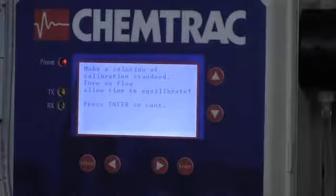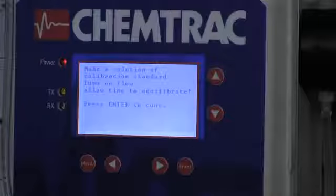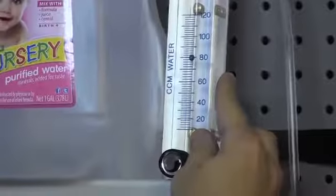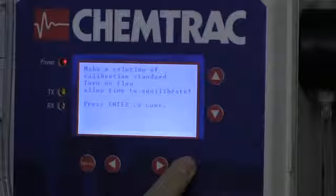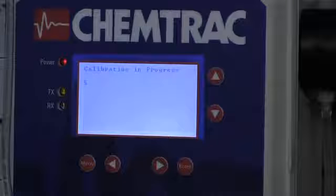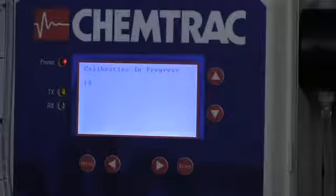Now we want to make sure that our flow is properly set. The flow being at 75 milliliters per minute is very important when you're doing this calibration. So we'll get it set right where we want it and then we're going to hit enter to continue. It'll take just about 15 seconds or so to perform the calibration.